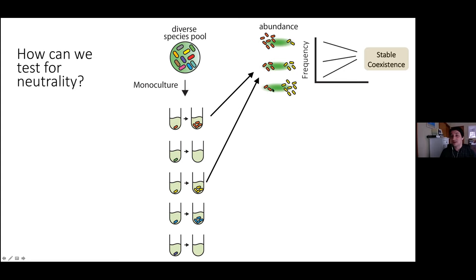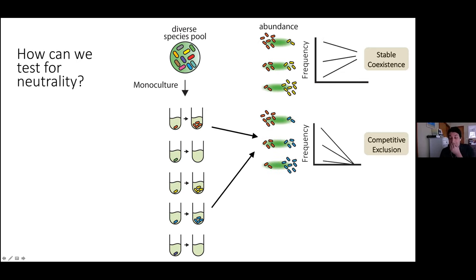If two species coexist stably, these three cultures started at different initial abundances should converge to the same equilibrium. If one is competitively excluding the other, all should converge to the winner regardless of initial frequency. For example, if the blue community dominates, the red would go extinct in competition with blue no matter the initial frequency.